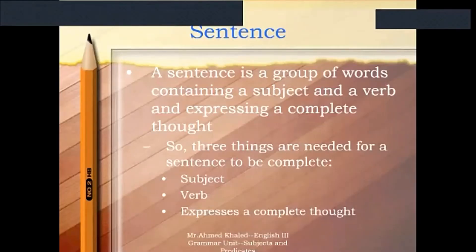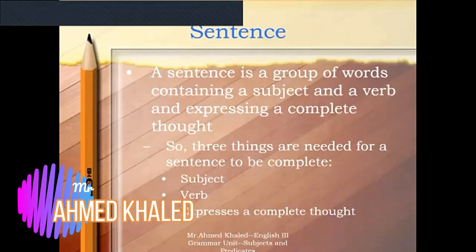The sentence is a group of words that contains a subject and a verb, but at the same time it must express a complete idea or thought. So we have three things that are needed for a sentence to be complete: the first one is subject, then verb, and this subject and verb must express a complete thought or idea.